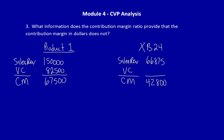For Product 1, which was the Contribution Margin Income Statement at the beginning of the question, we have Sales Revenue of $150,000, Variable Cost of $82,500, and Contribution Margin of $67,500.